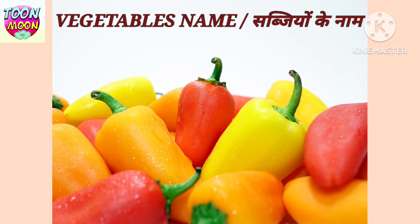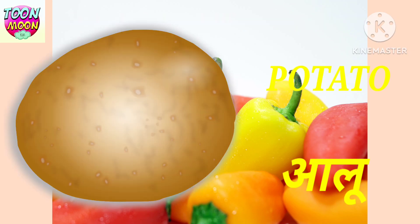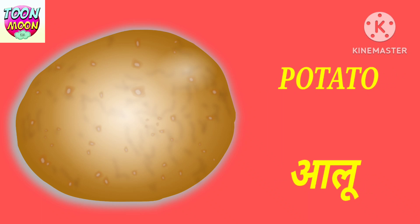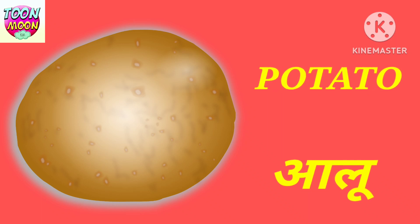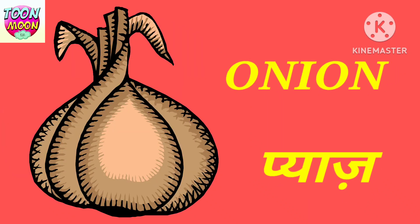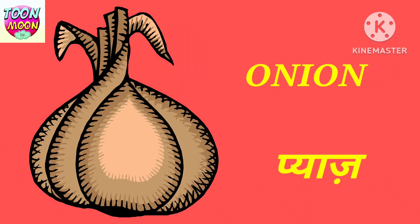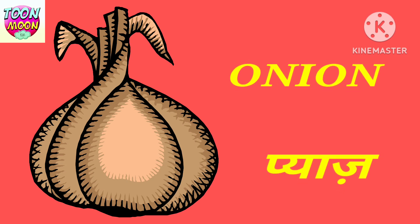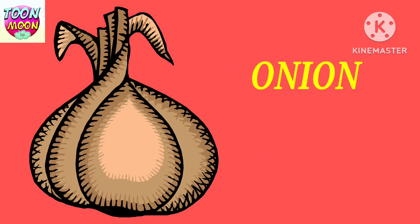Hello kids, let's learn vegetables names in Hindi and English. Potato — Potato means Aloo. Onion — Onion means Piaas.